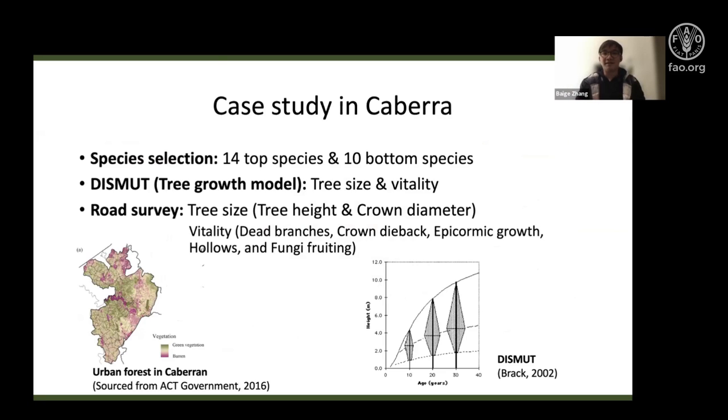In my study, we did a road survey in Canberra, and we firstly selected 24 species and categorized them into top species and bottom species based on their suitability for future climate conditions. The top species are assumed to be more suitable for the future, while the bottom species are vulnerable species.